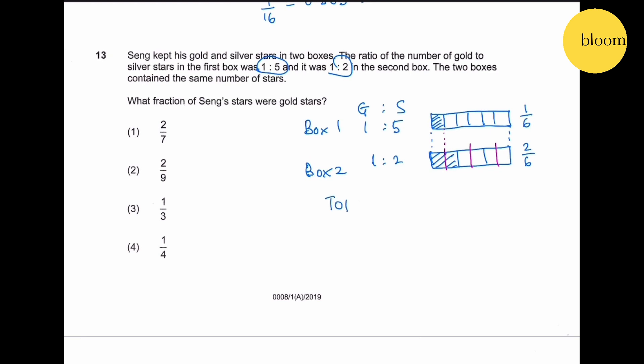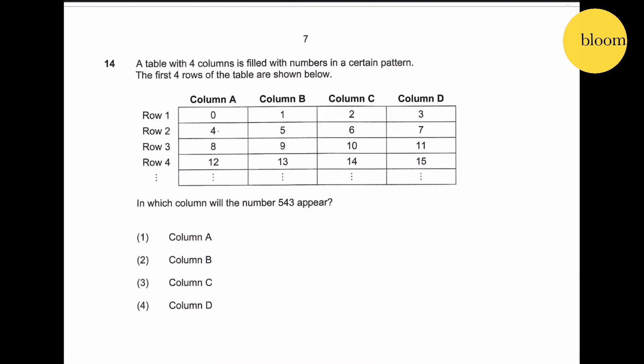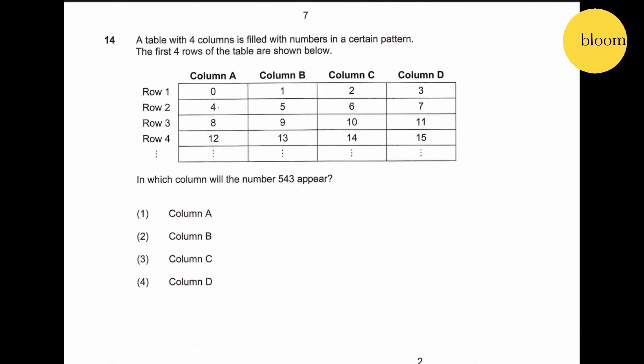So total stars: 6 plus 6 equals 12. Total gold equals 3. Therefore, 3 over 12 equals 1 quarter.